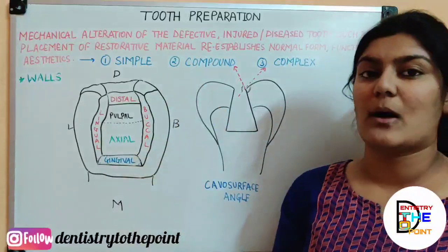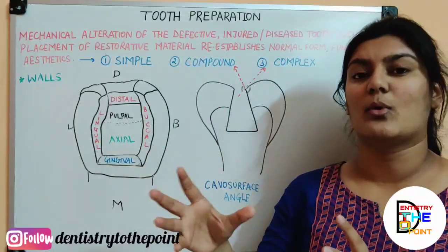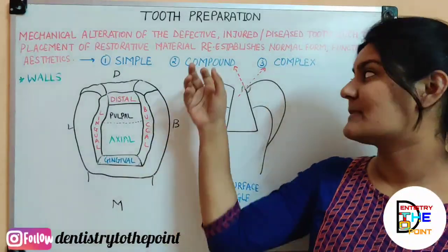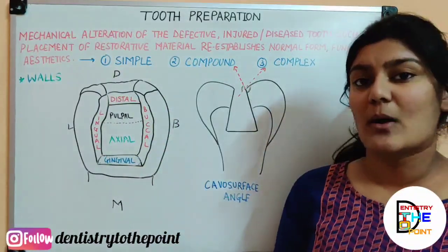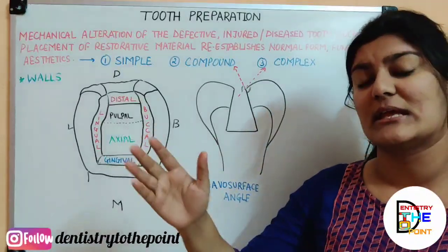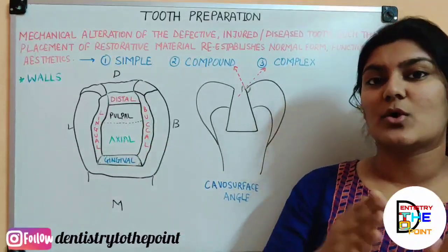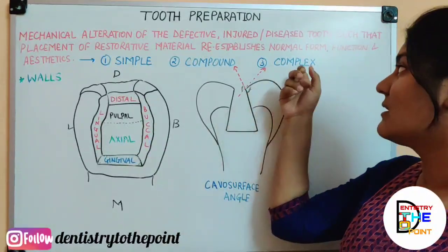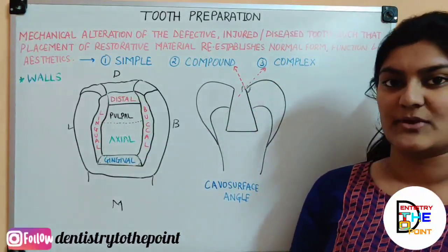You take the initials of the surfaces involved to name the preparation. So if it's compound — MO — that means mesial occlusal, which is a compound tooth preparation. If I say MOD — that is mesial occlusal distal preparation — that is a complex preparation.